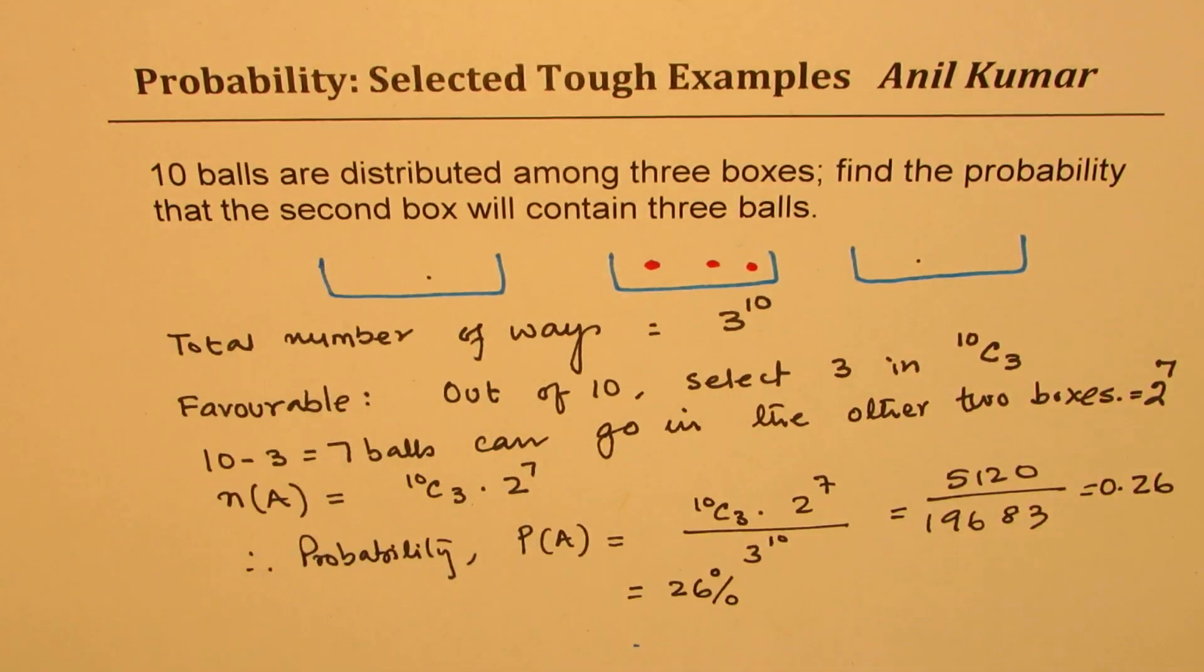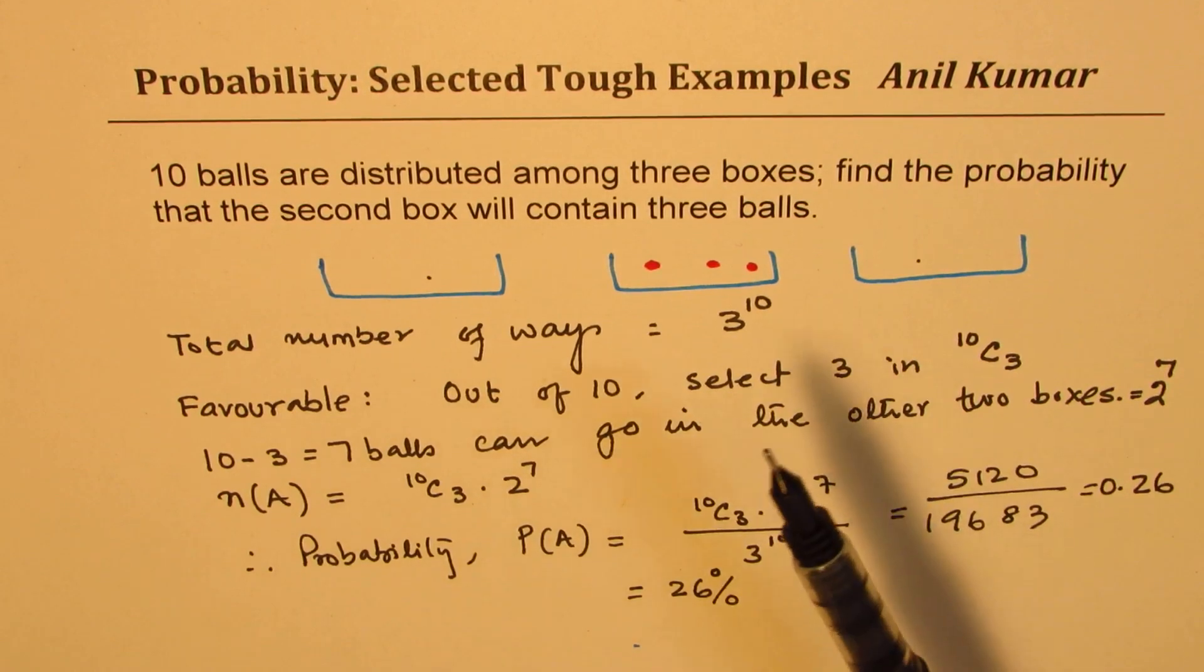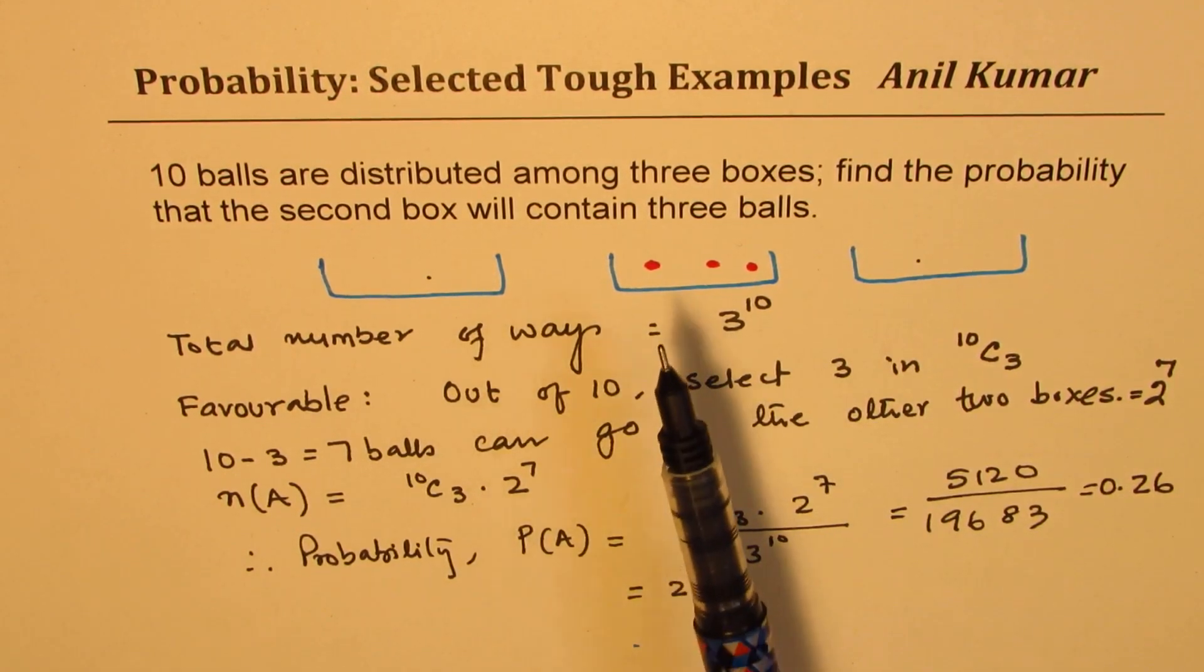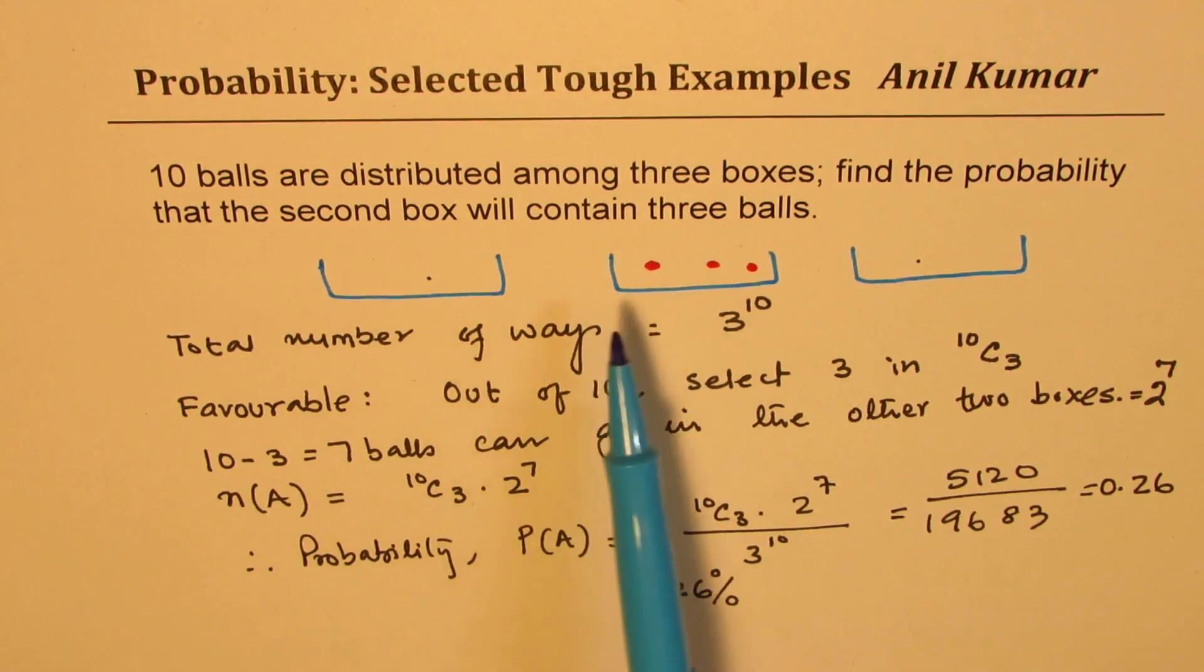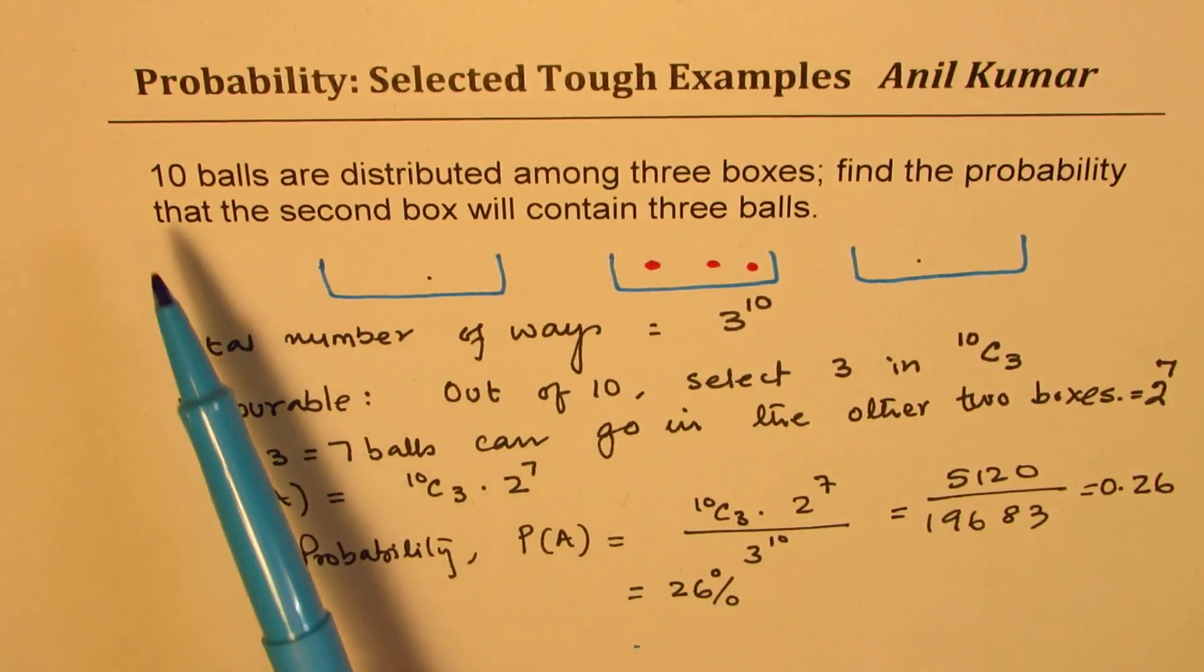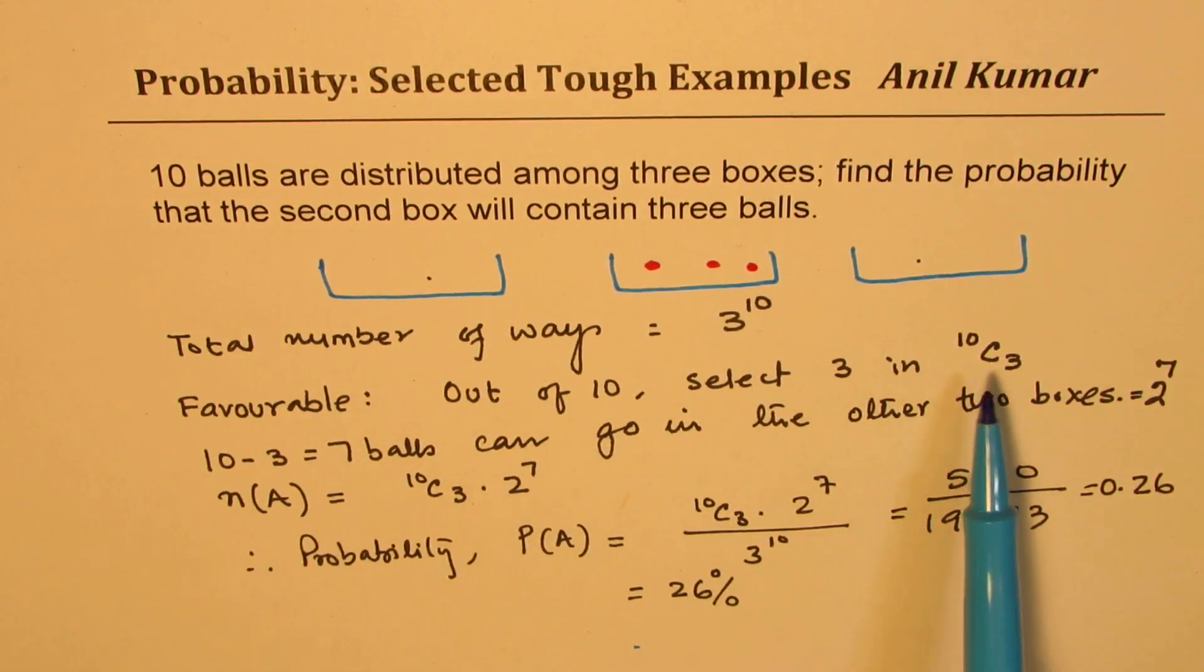That is how you could actually solve this question. Let's look into it. The constraint given to us is that in the second box, we should have 3 balls. We'll begin from there. Selecting 3 out of 10 means choose 3 out of 10, which is 10C3.